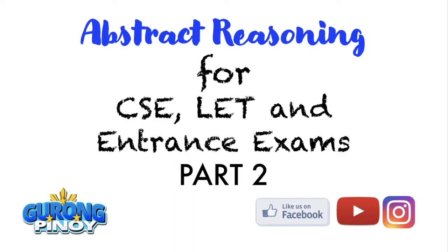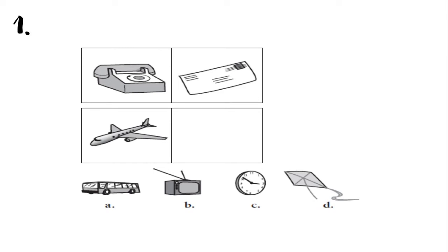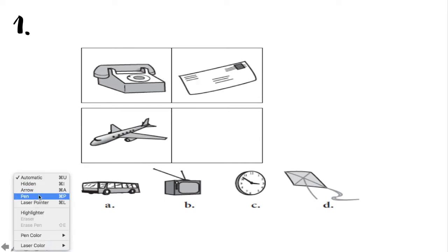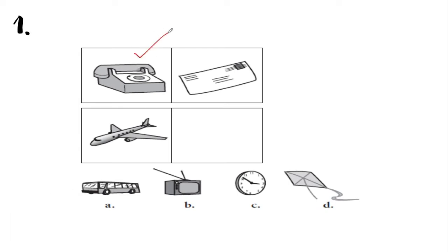Let's go to the first item. The first item shows three pictures: the first one is a telephone, the second one is a letter, and then you have an airplane. You're asked for the answer that should go in the lower right box. To find the correct answer, let's check the purpose or the relationship between the first two pictures — the telephone and the letter. As you can see, they are related based on their purpose.